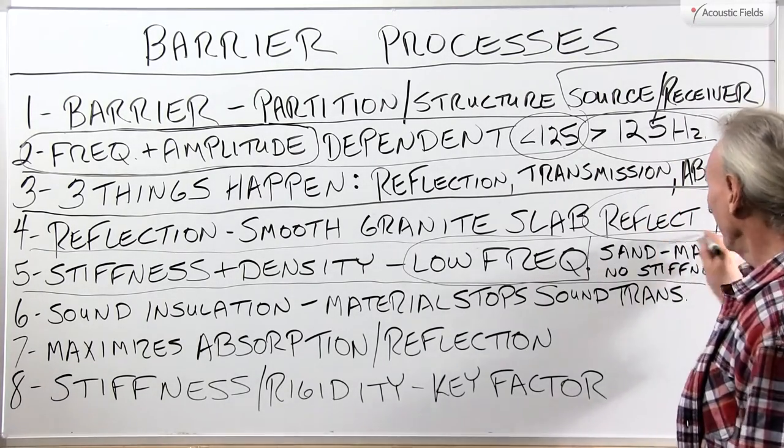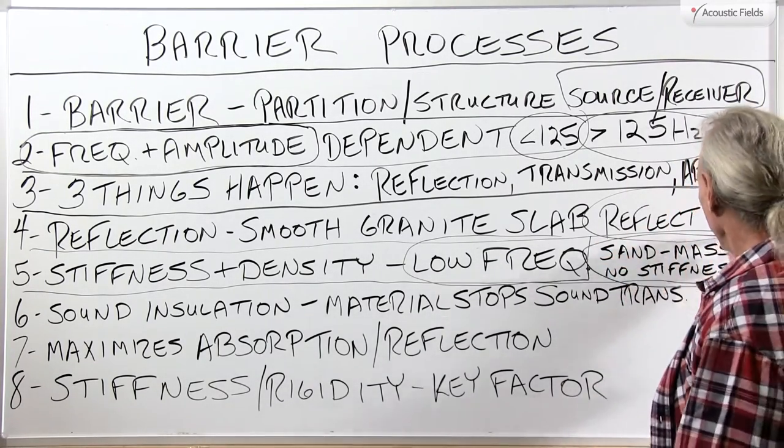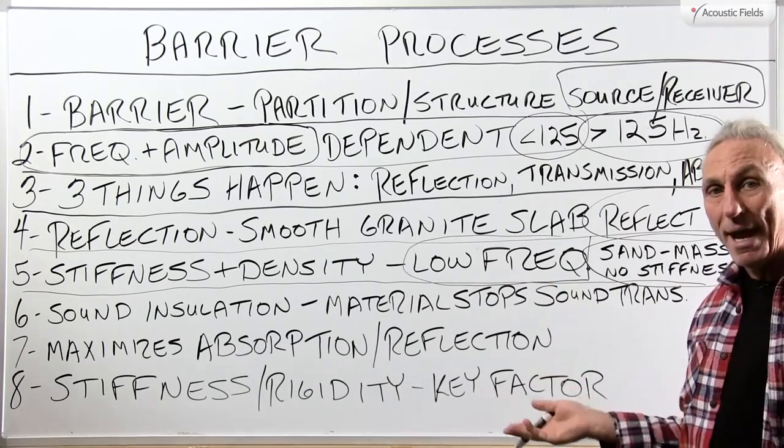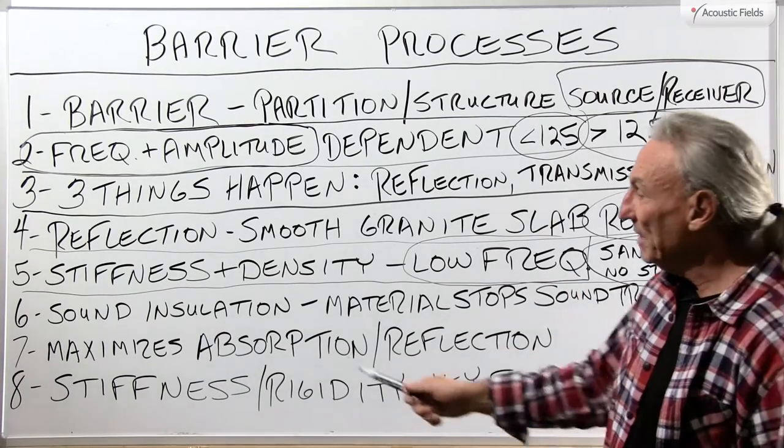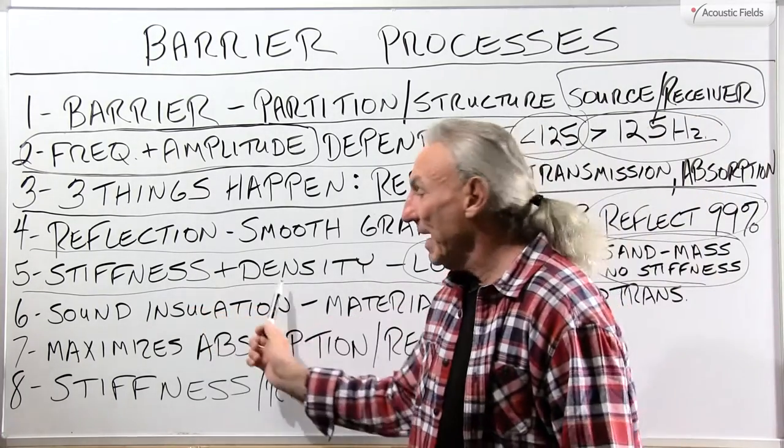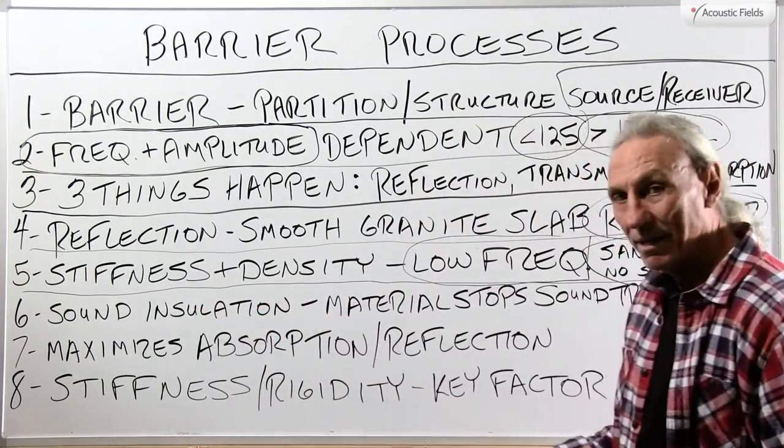Here's another example — sand. Lots of mass, but not stiff. So we need both stiffness and density.